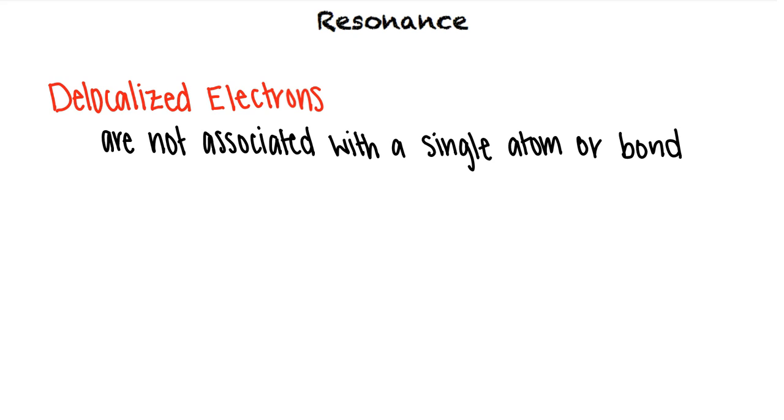Because of this, we can't draw a single Lewis structure to describe the molecule. Instead, the actual structure is a resonance hybrid and takes the contributing structures into account.